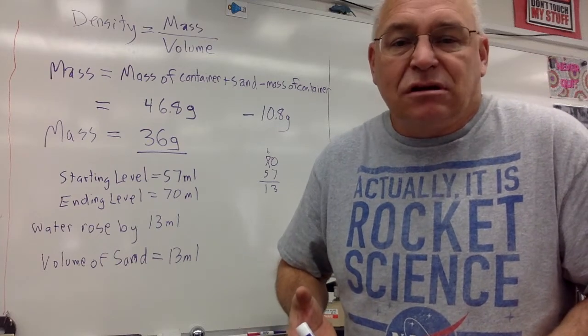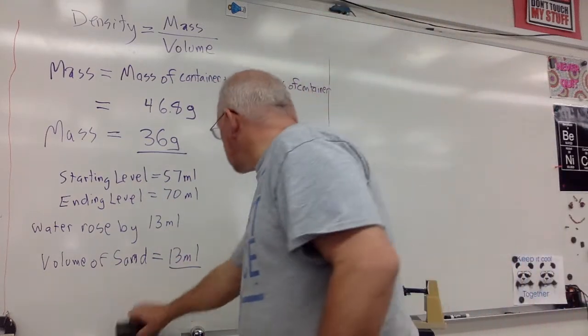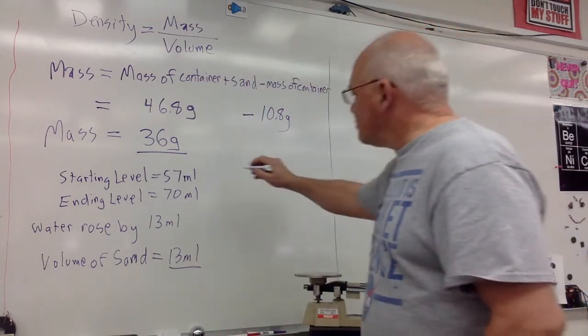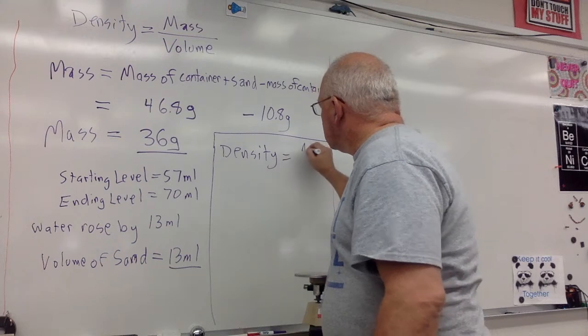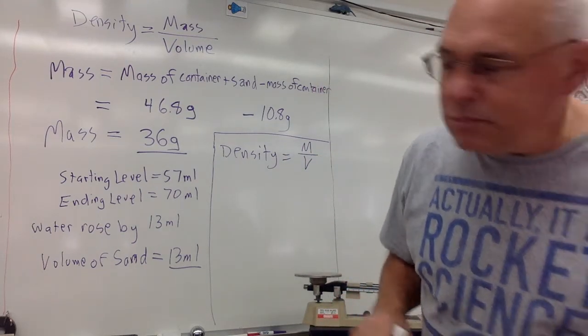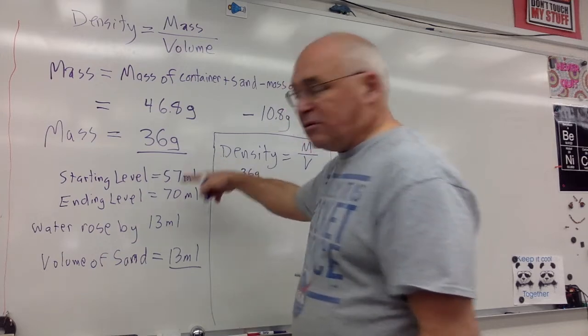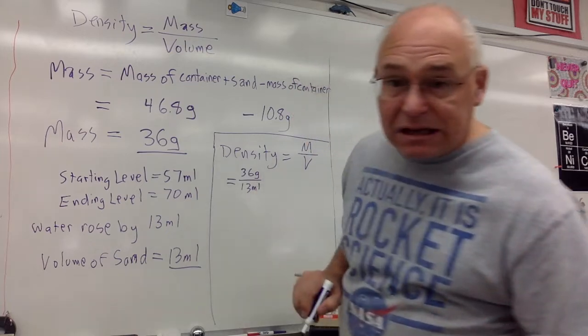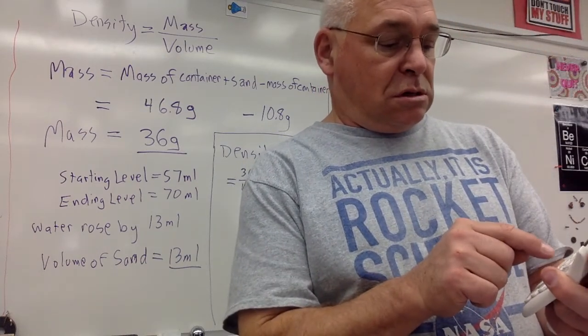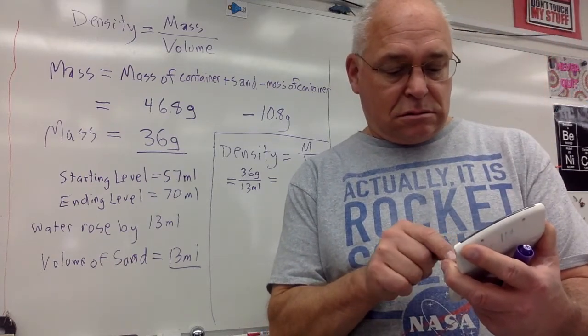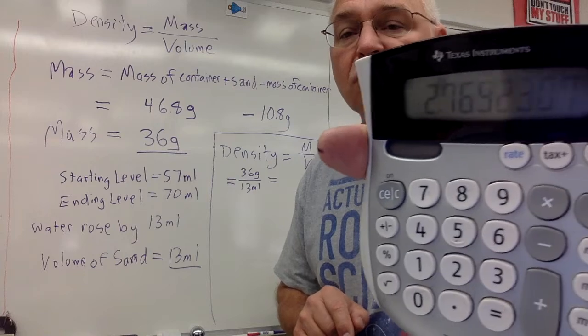So the volume of the sand is 13 milliliters. The sand made the water rise up that much. So the mass of the sand, 36 grams. The volume, 13 milliliters. Density equals M over V, mass over volume. The mass, 36 grams. Over the volume, 13 milliliters. And we get 36 divided by 13.